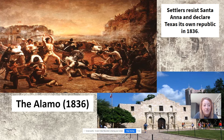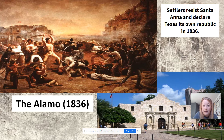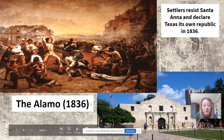But the Americans in Texas did inevitably go to war with Mexico. They had a very organized army and navy. And one of the most famous incidents took place at the Battle of the Alamo in 1836, which is in present-day San Antonio, Texas.